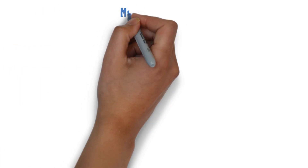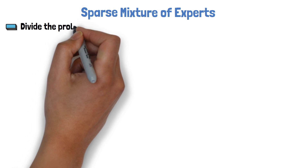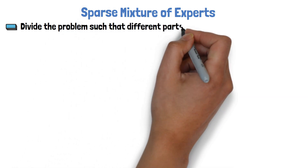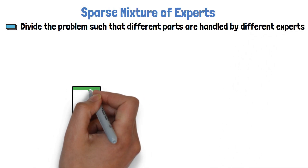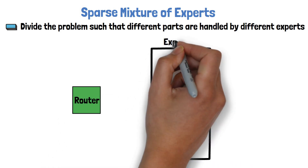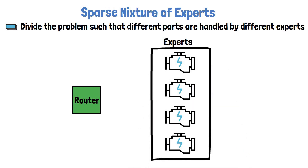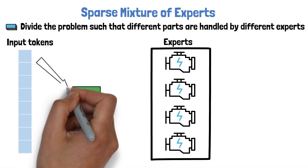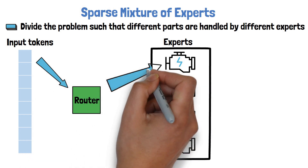First it is important to understand what is Mixture of Experts. The common methods up until now are Sparse Mixture of Experts. The idea is that instead of having one large model that handles all of the input space, we divide the problem such that different parts are handled by different experts. In each layer we have a Router component and an Experts component, where the Experts component is comprised of multiple distinct experts, each with its own weights. Given input tokens, each token passes via the Router, and the Router decides which expert should handle this token, and routes the token to be processed by that expert.